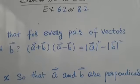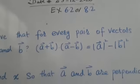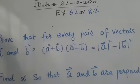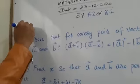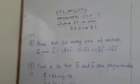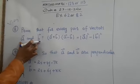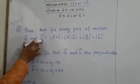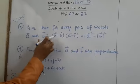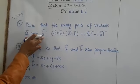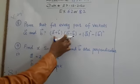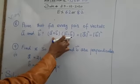Exercise 6.2 or 6.8, this is the 8th question. Prove that for every pair of vectors A and B, (A+B)·(A-B) = |A|² - |B|². So we have to prove this expression.